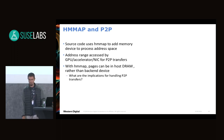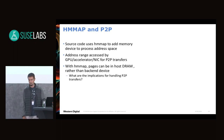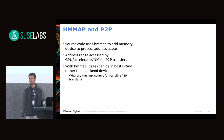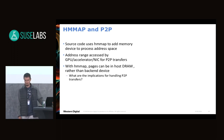Another interesting direction is peer-to-peer PCIe accesses. If an application uses HMMap to expand its virtual address space and also wants to use a GPU, accelerator, or network card for peer-to-peer with the backend device, there's a complication: HMMap may have promoted some pages into host memory, so there's no guarantee pages are in the backend device. This makes peer-to-peer trickier than if everything were in the device or entirely in host memory. We're looking at ways to handle this.